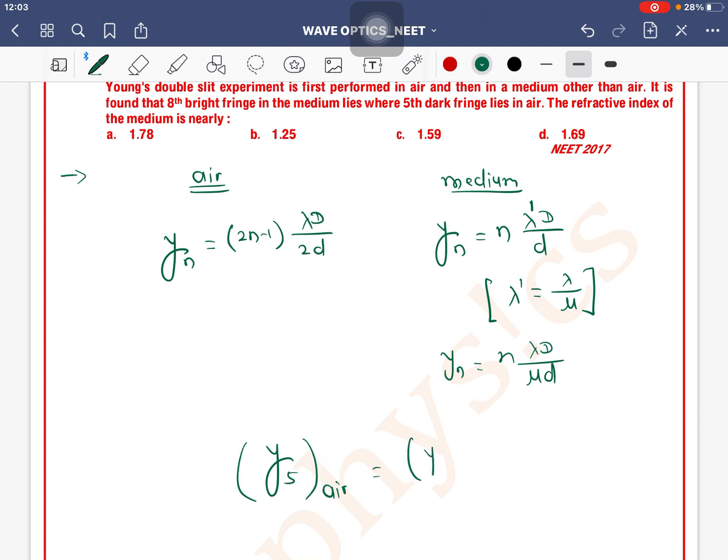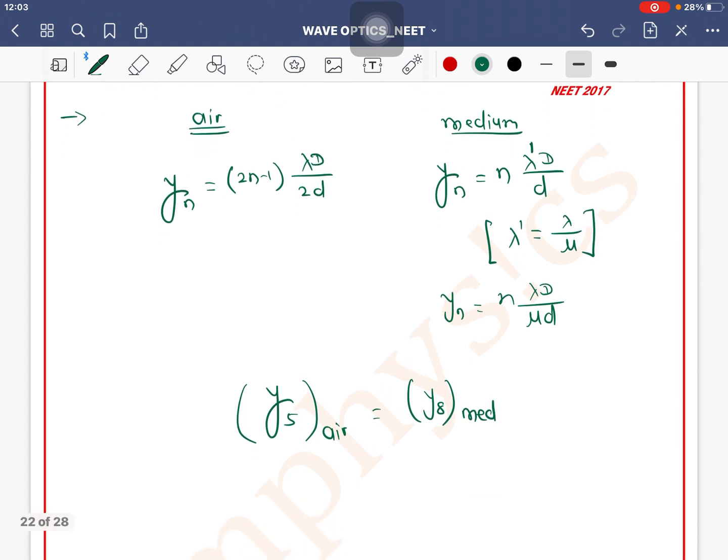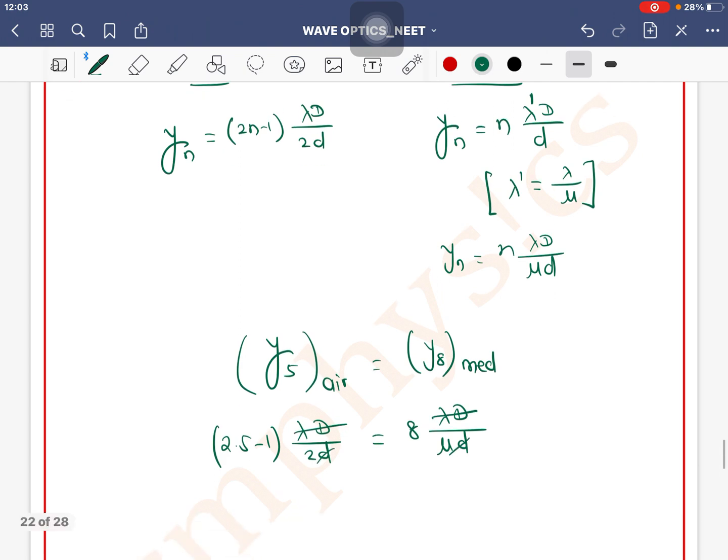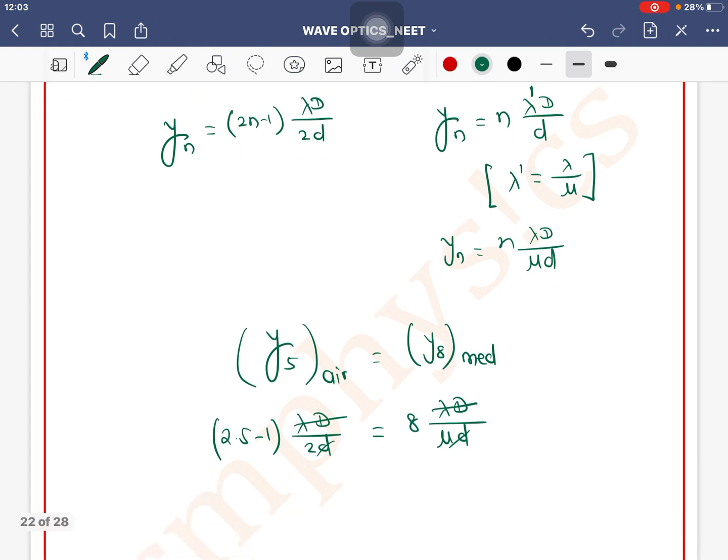So y5 air is equal to y8 in medium. If we compare these two equations: 2 into 5 minus 1 into lambda d by 2d is equal to 8 lambda d divided by mu d. Lambda d and d cancel out.